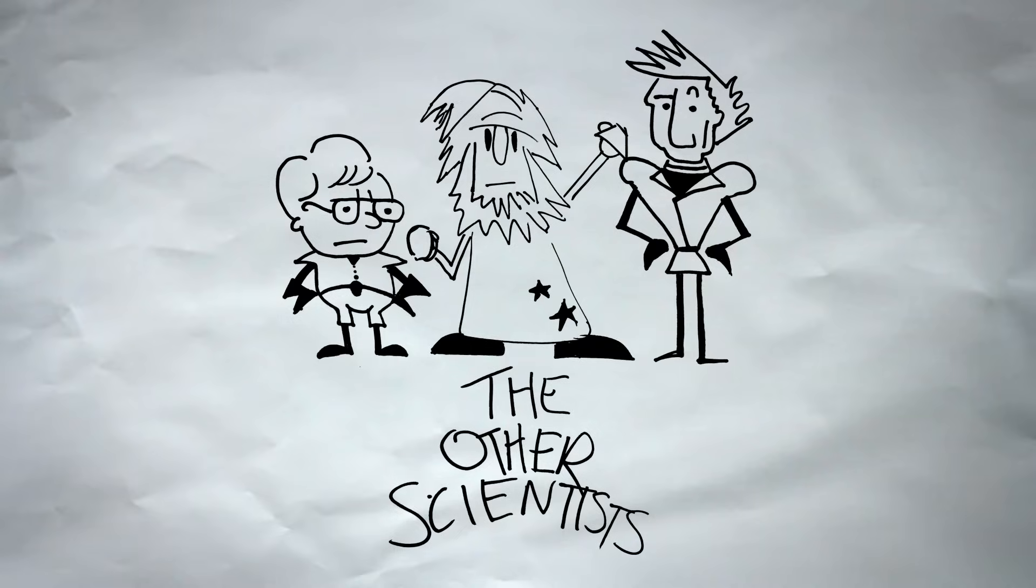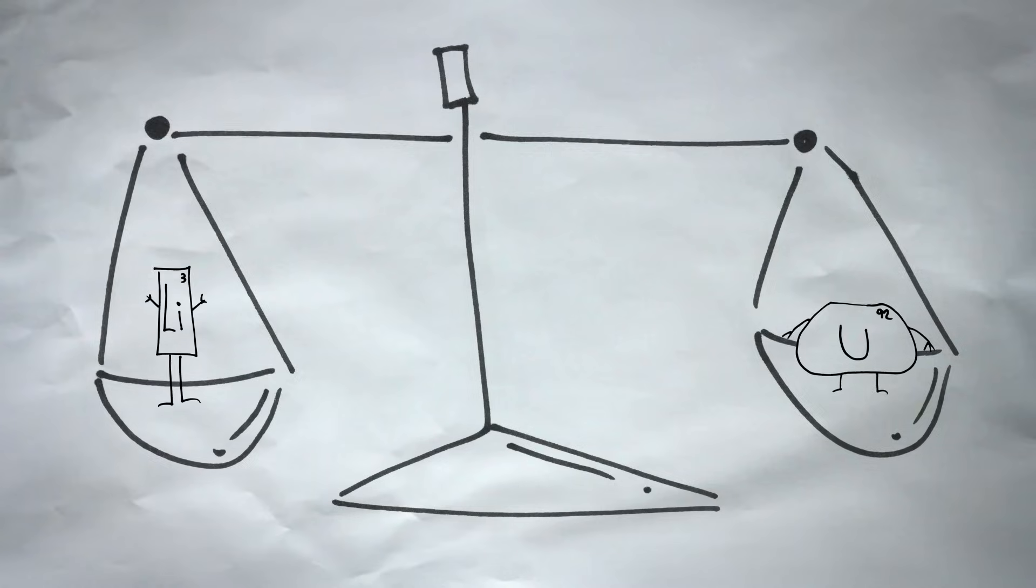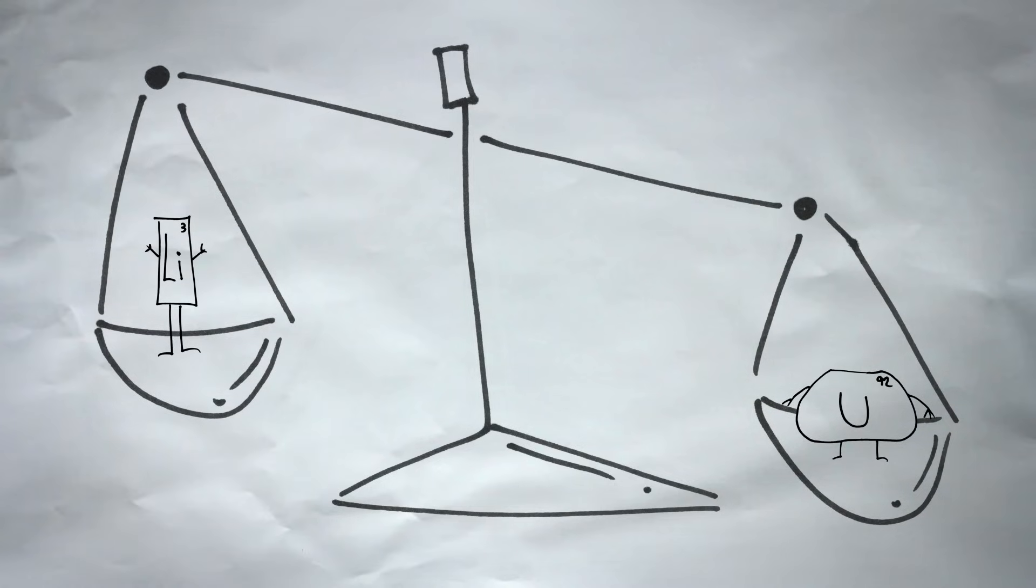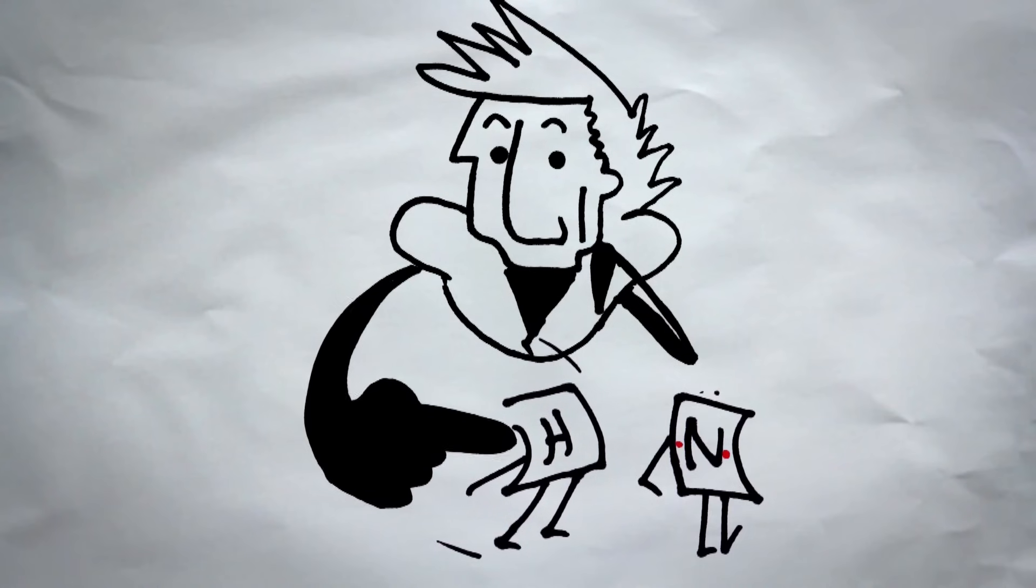Many other chemists then came along to make the puzzle clearer. One of them, John Dalton, weighed the elements and arranged the puzzle by weight. German chemist Wolfgang Doberreiner later combined elements to see how they reacted with one another.